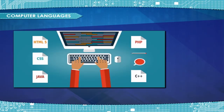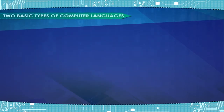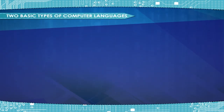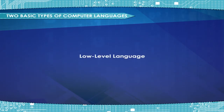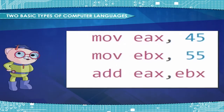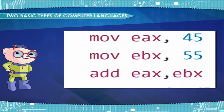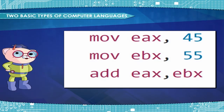Basically, languages can be divided into two categories. Two basic types of computer languages: low-level language and high-level language. A low-level language is a language that corresponds directly to a specific machine. There are two types of low-level languages.